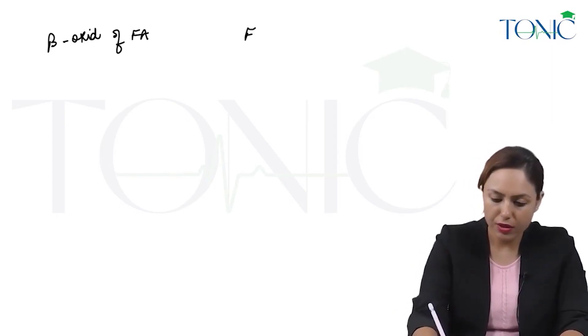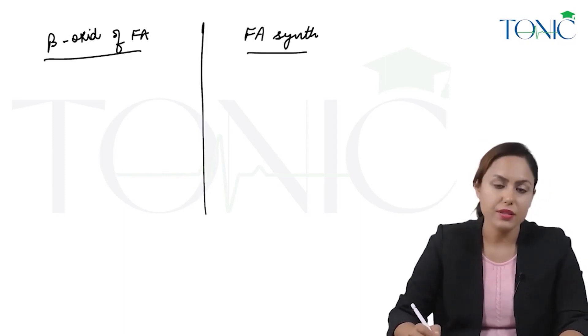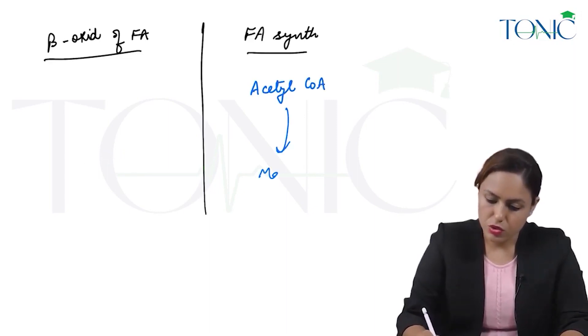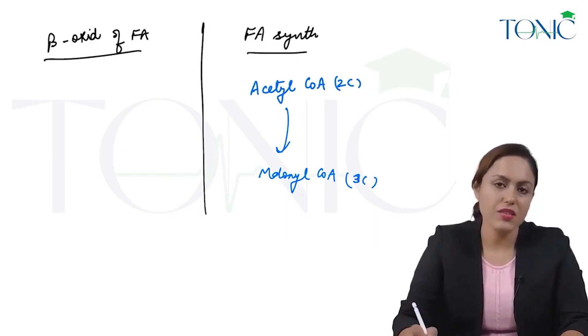One is beta oxidation of fatty acid, the other is fatty acid synthesis. In fatty acid synthesis, the first step is acetyl CoA to malonyl CoA formation—two carbon to three carbon—and here is the rate limiting enzyme.